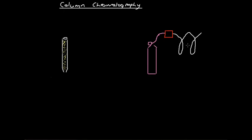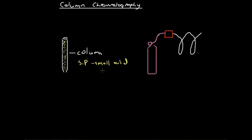In column chromatography, we have what's called a column. This column is kind of like a burette that we might have used in volumetric analysis — a vertical glass tube containing lots and lots of small solid particles filling up the column. They are the stationary phase. They fill the column and they are what we pass our sample through.